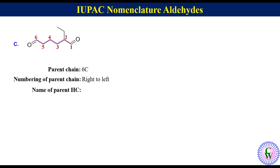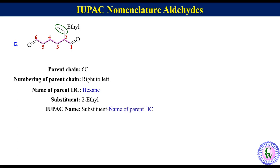Name of parent hydrocarbon: since there are 6 carbon atoms, it will be named as hexane. Substituent: there is an ethyl group at C2, so it will be written as 2-ethyl. The IUPAC name consists of substituents + name of parent chain + 'dial'. So the IUPAC name of this molecule will be 2-ethylhexanedial.